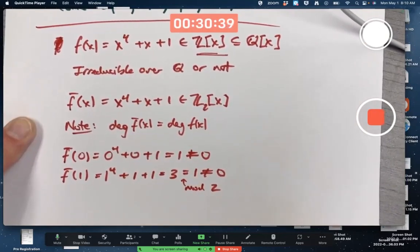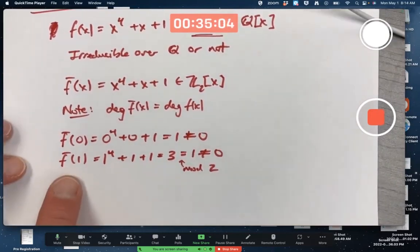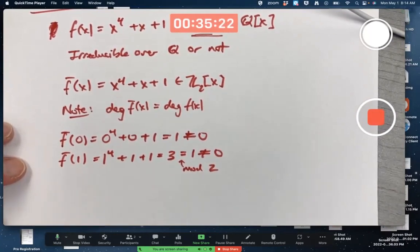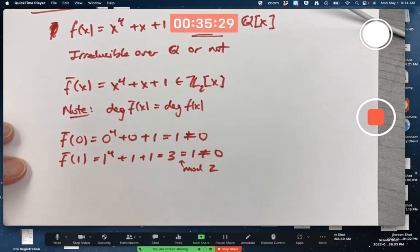0 is not a root, and 1 is also not a root. We're doing mod 2 arithmetic here. So it's got no linear factors. Neither 0 nor 1, which are the only possible zeros in Z_2, is a zero of f bar of x. So x minus 0 and x minus 1 can't be factors. Those are the only possible linear factors. Remember, x minus 1 is equivalent to x plus 1 mod 2. x and x plus 1 are the only possible linear factors, and they're not, because these are not zeros.